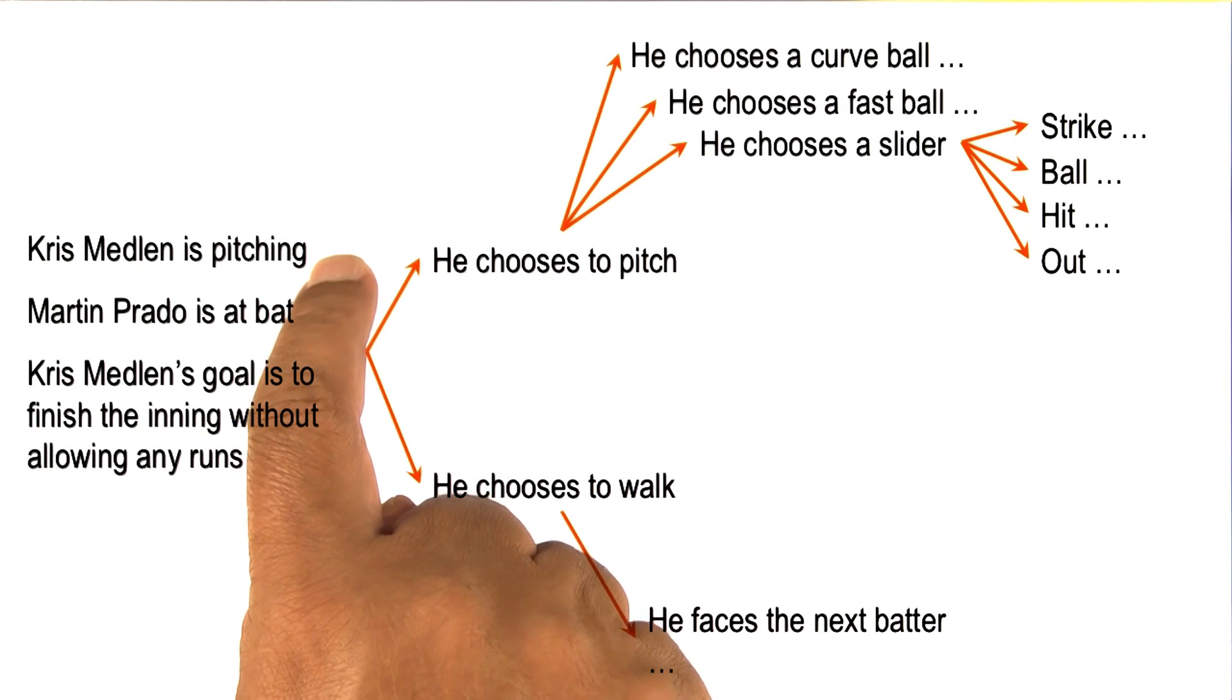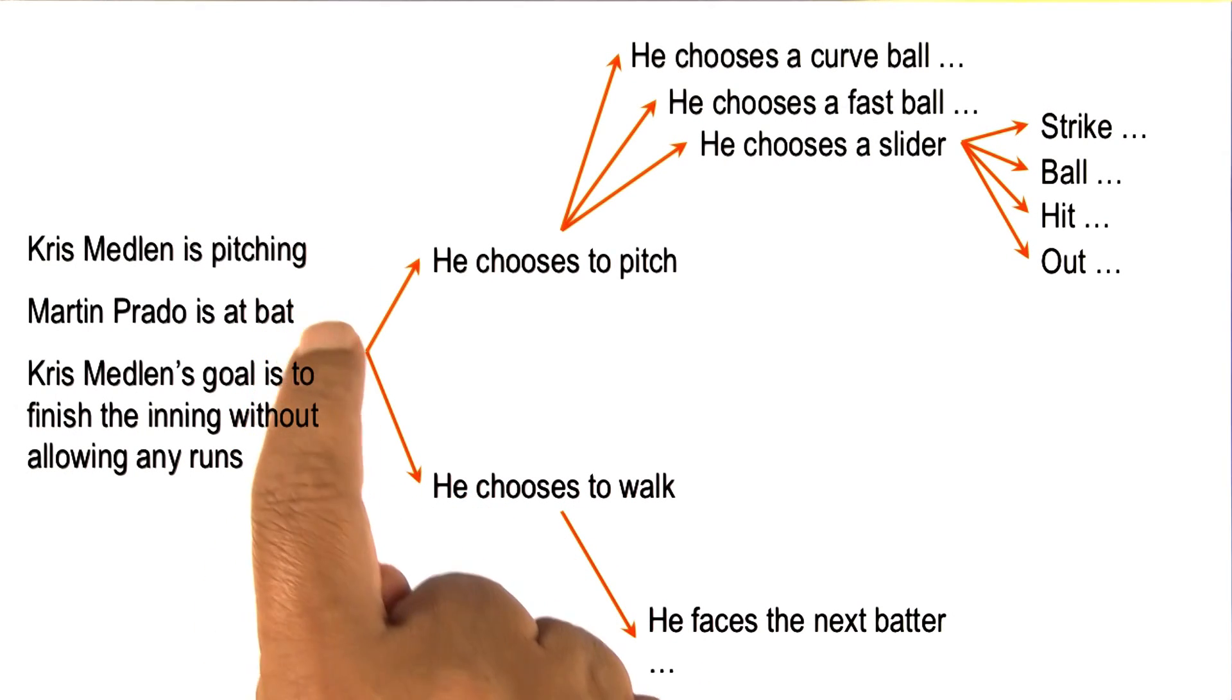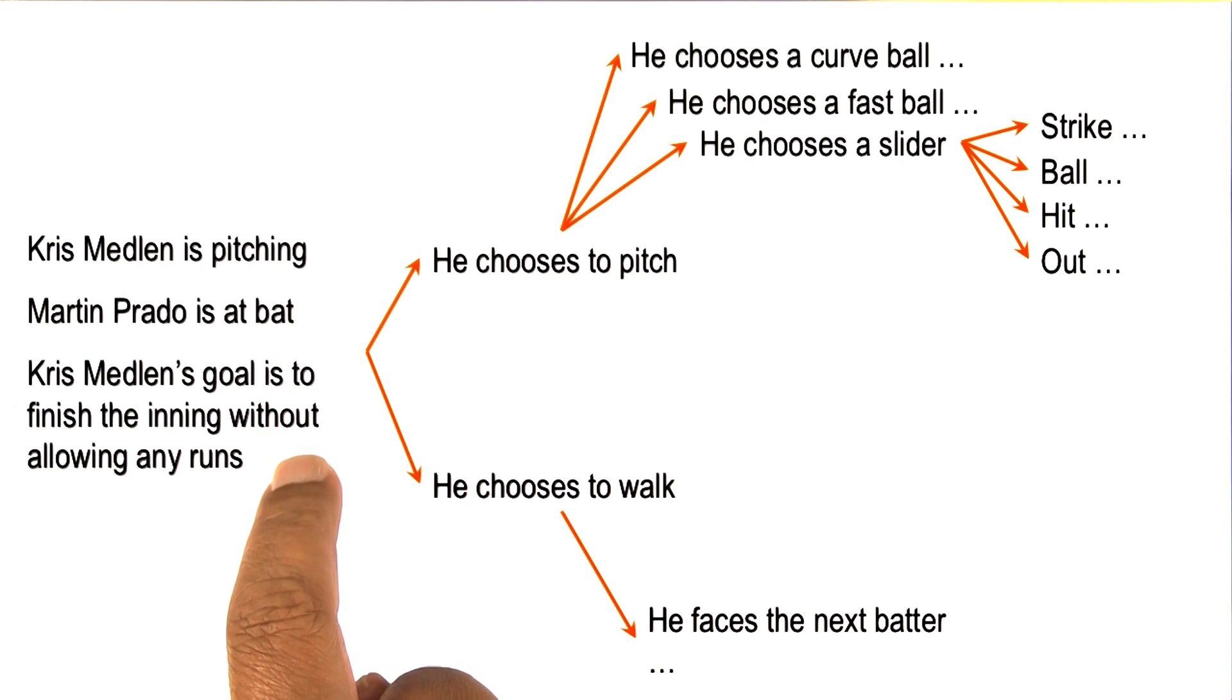So imagine that Chris Medlin from Atlanta Braves is the pitcher, and Martin Prado from Arizona Diamondbacks is at the bat. Chris Medlin has the goal of finishing the inning without allowing any runs.